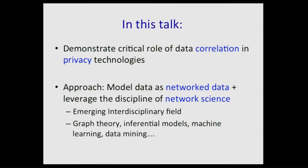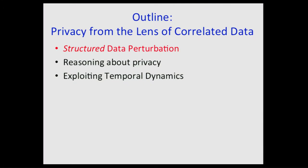The approach I will talk about will model data in the form of network data—graphs—and I will show the connection between privacy-preserving analytics and the discipline of network science studying properties of complex networks, including computer networks, social networks, and genomic networks, building upon foundational techniques in graph theory, inferential models, machine learning, and data mining. The three key takeaways are: reasoning about structural properties of data and how to exploit them in mechanism design; the impact of structural properties on privacy reasoning; and thinking about the temporal dynamics and evolution of data.